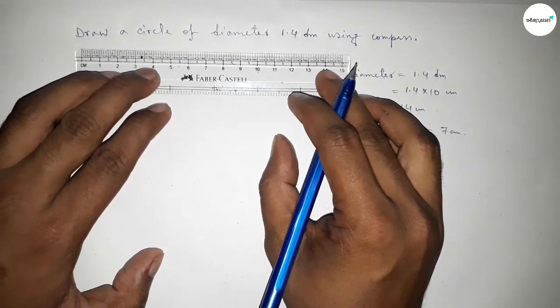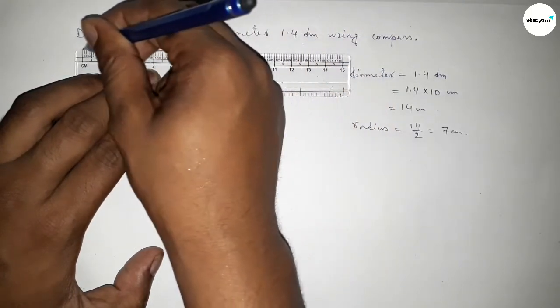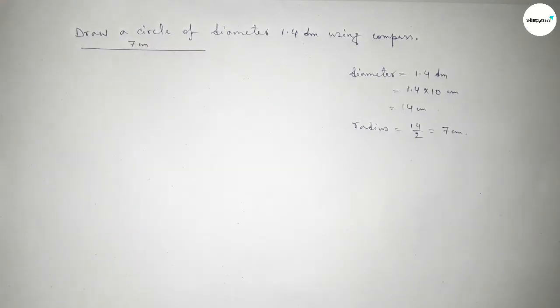So first we have to draw here a line of length 7 centimeter. So this is a 7 centimeter, so this one, 7 centimeter line.